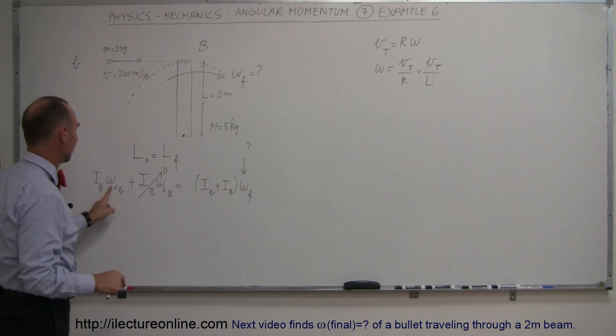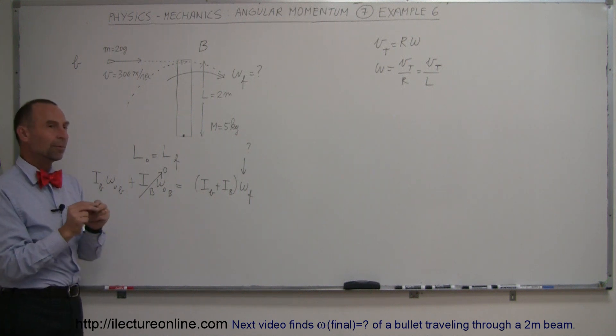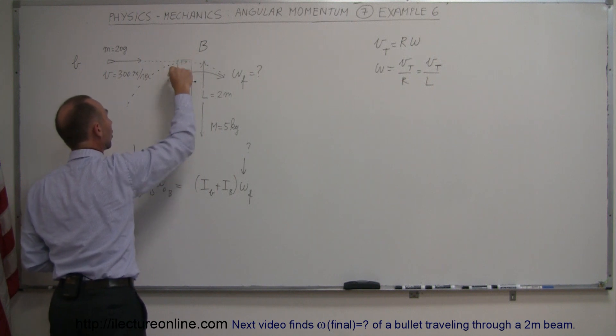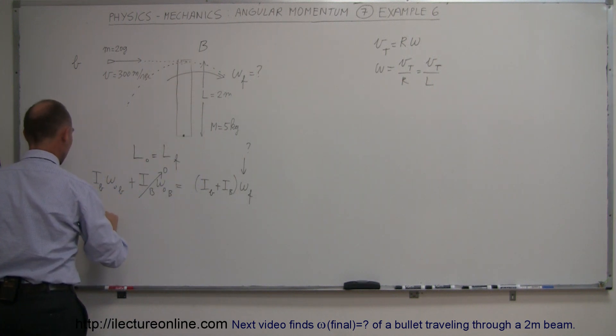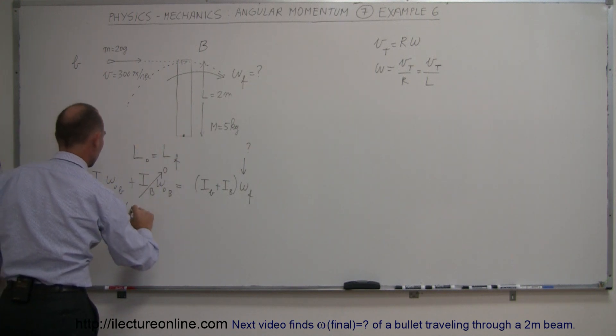So there that goes in here. Omega goes in here for omega. I for the bullet would simply be MR squared because the whole mass of the bullet is at the distance R or L away from the point of rotation. So here we have the mass of the bullet, M, times the distance to the point of rotation, L squared.